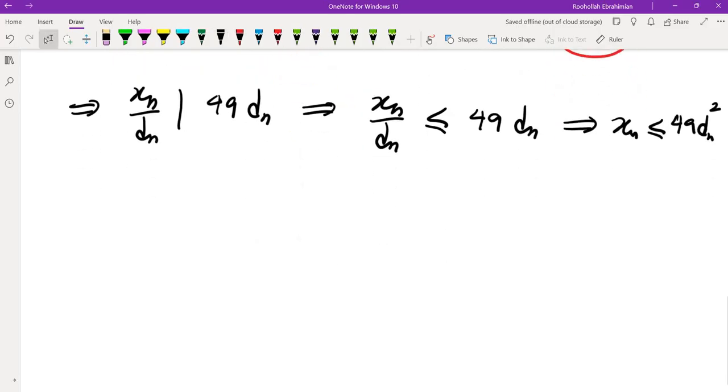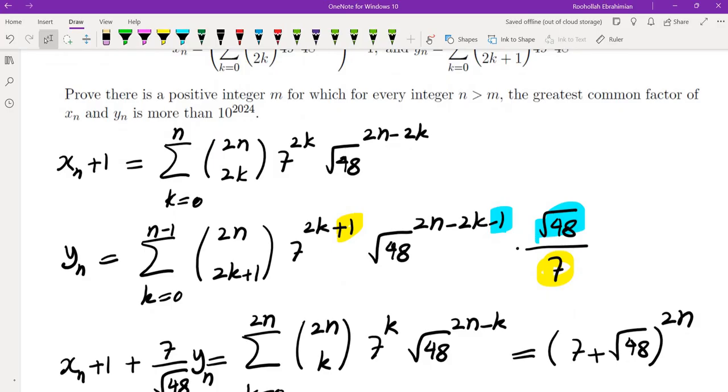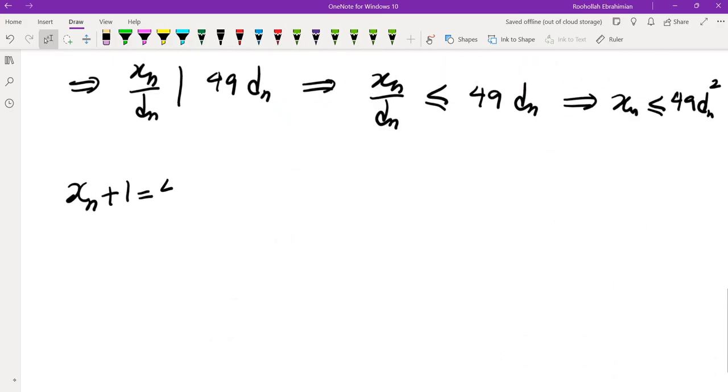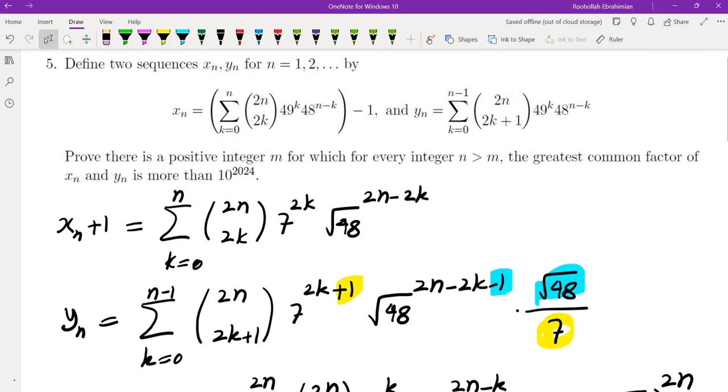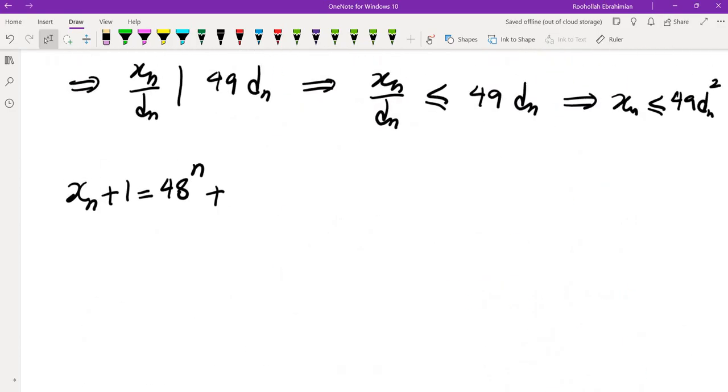Now let's look at xn. If you look at xn plus 1, we have lots of terms. The first term is when k is 0, so you get 48 to the power of n. The last term is when k is n, so we get 7 to the power of 2n, plus lots of other terms. That tells us xn is more than 7 to the power of 2n.